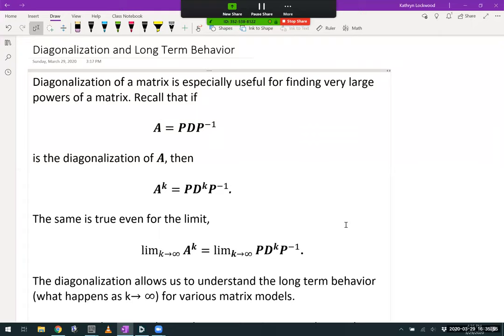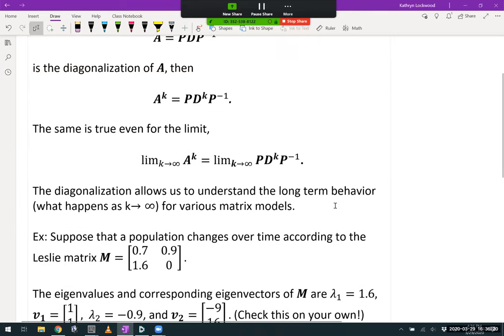It follows then that A to the k is equal to P times D to the k times P inverse. And generally, passing to the diagonal matrix D is much simpler, in that taking powers of a diagonal matrix is a lot easier than taking powers of some general matrix A. Now, the same is true even for the limit. If we look at the limit as k tends to infinity of A to the k, it's equal to the limit as k tends to infinity of P, D to the k, P inverse, using the diagonalization. And once again, it's typically much simpler to find the limit for the right-hand side.